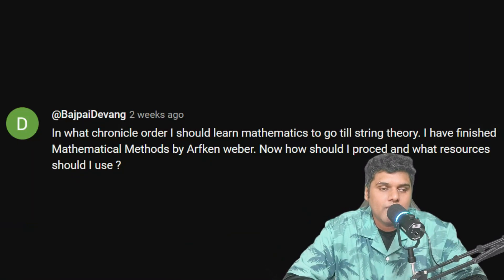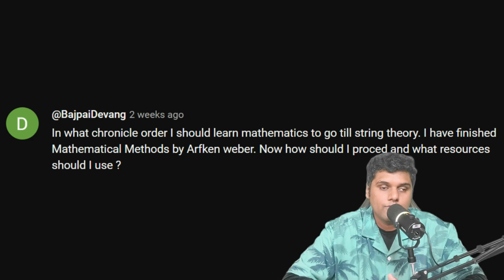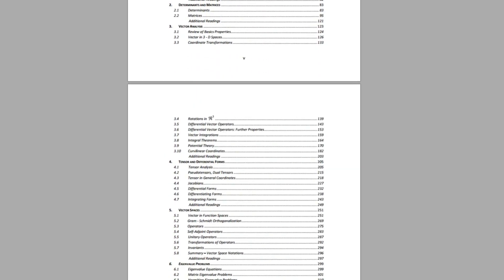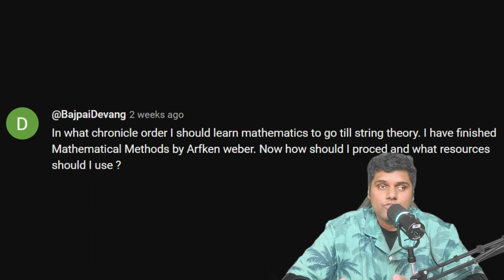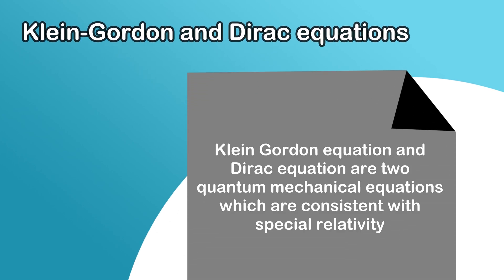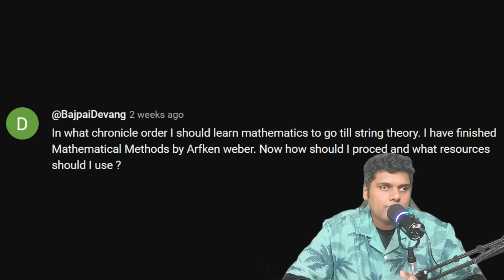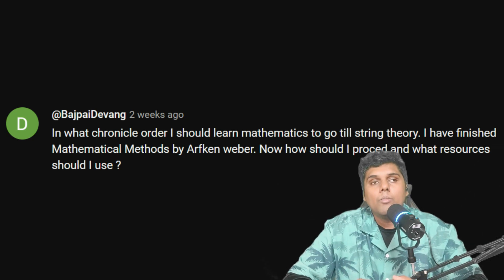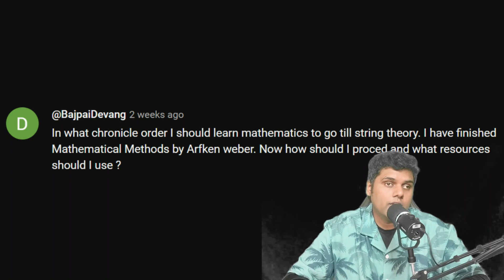The next question is from Bajpai Devank: in what chronological order should I learn mathematics to get to string theory? I've finished Mathematical Methods by Arfken, Weber, and Harris — how should I proceed? Arfken, Weber and Harris is very good for almost all undergrad-level physics and some graduate-level physics too. To reach string theory, learn quantum mechanics first, then relativistic quantum mechanics — including the Klein-Gordon equation and the Dirac equation — then quantum field theory. After QM and QFT, you can start string theory, as most QFT techniques will carry over.